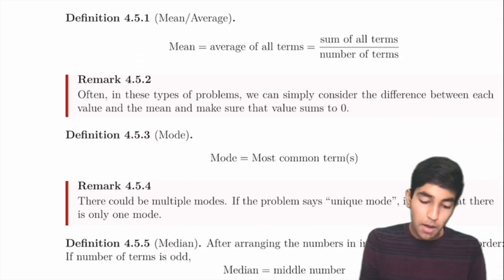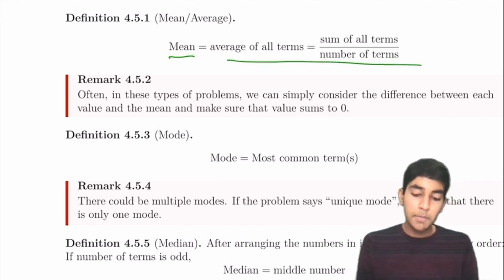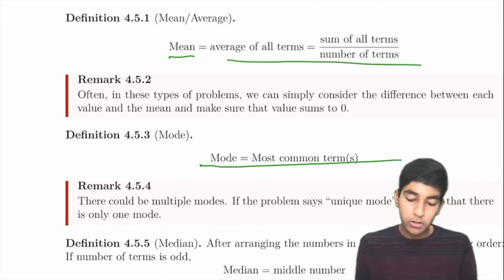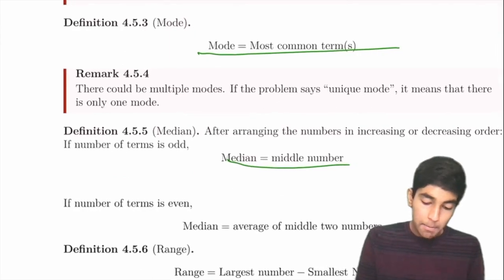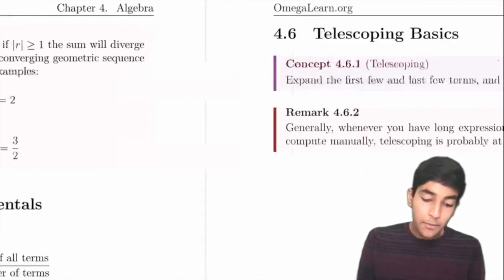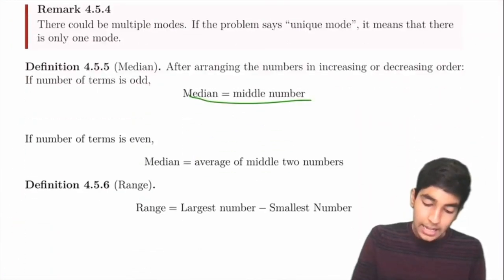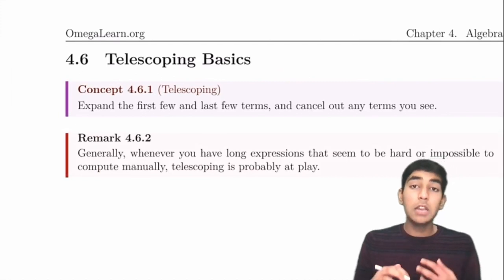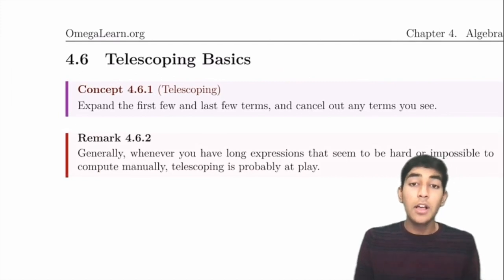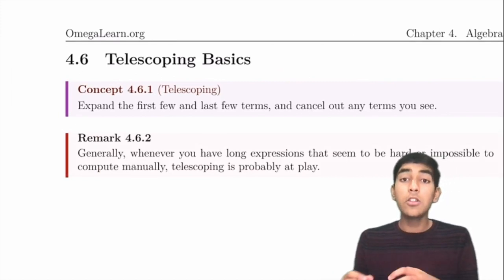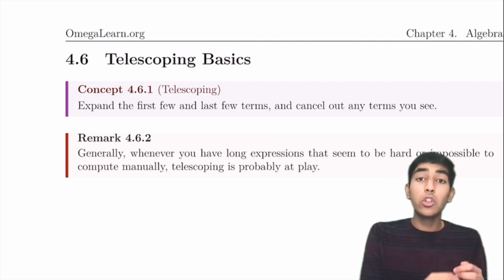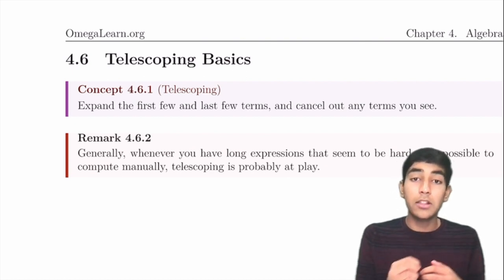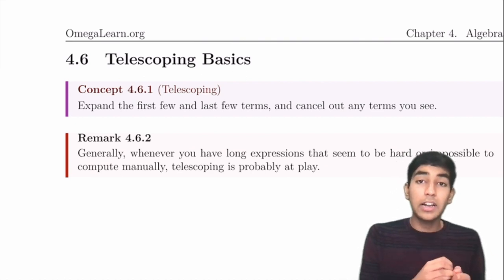Mean is the average (sum / count), mode is the most common value, median is the middle number, and range is the largest minus smallest. Problems will not be straightforward — they may involve a secret list of numbers and require casework using mean and median to find the values.